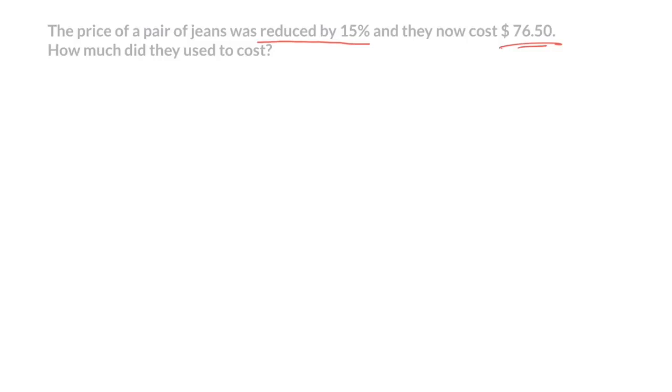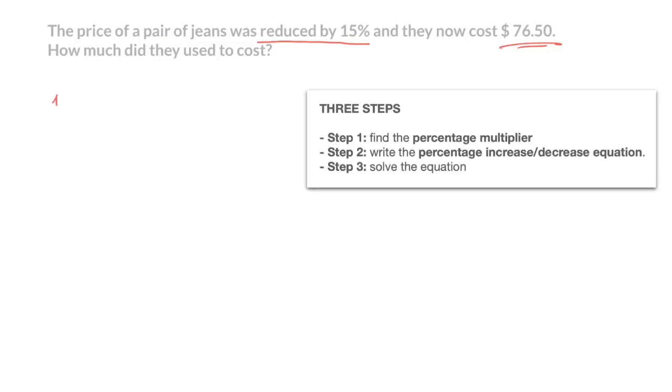Well, for that, we follow the same three steps as in our previous example. Those were, step one, find the percentage multiplier for the percentage increase or decrease. Well, in this case, we're dealing with a percentage decrease, so we need to find the multiplier which allows us to decrease by 15%, and that would be 1 minus 15%. That equals 1 minus 0.15. Finally, that's equal to 0.85.